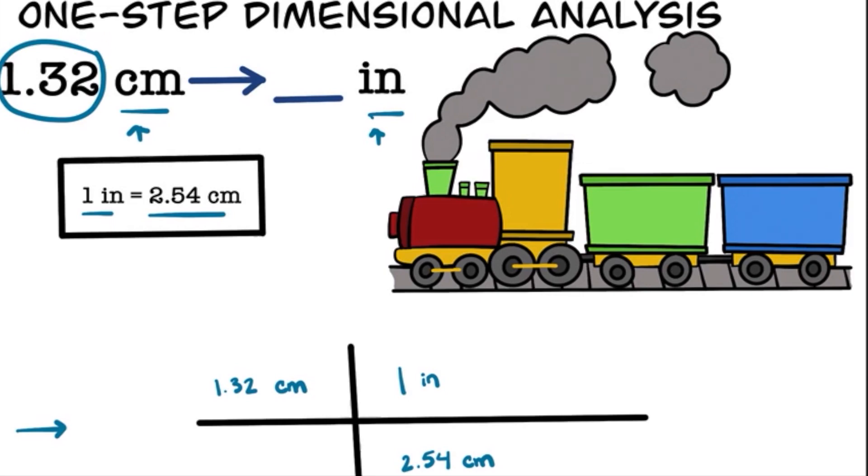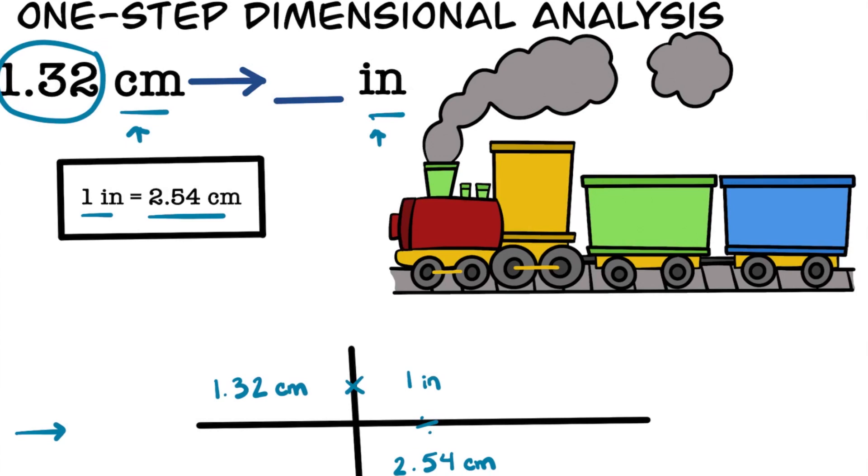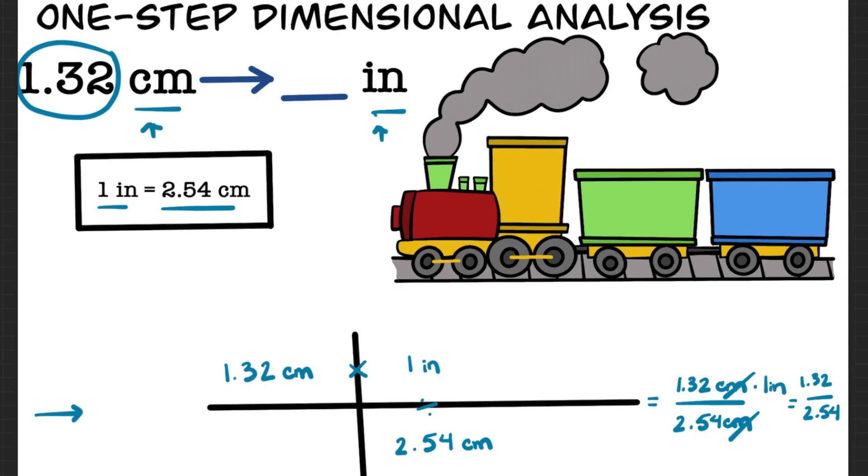Our final step is to multiply across all the values on the top and the bottom of our train tracks. The top will give us 1.32 times 1, which is equal to 1.32. We then multiply all the values on the bottom of our train tracks, which will be 2.54. We then divide the top by the bottom, which will be 1.32 divided by 2.54, or 0.51968 inches.